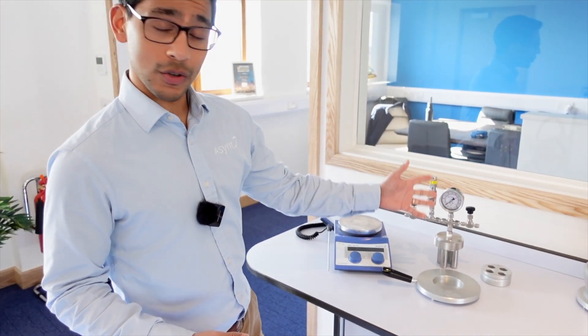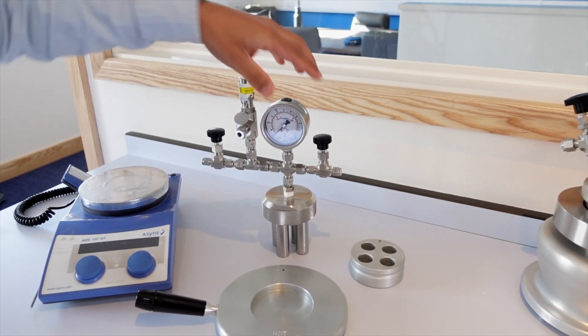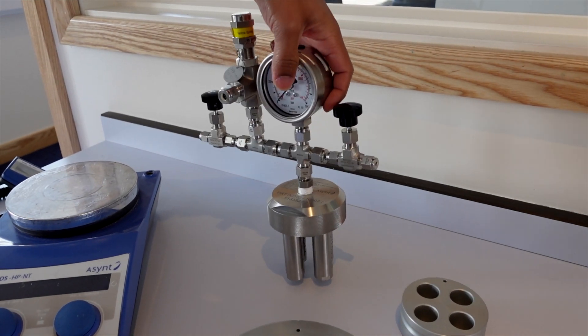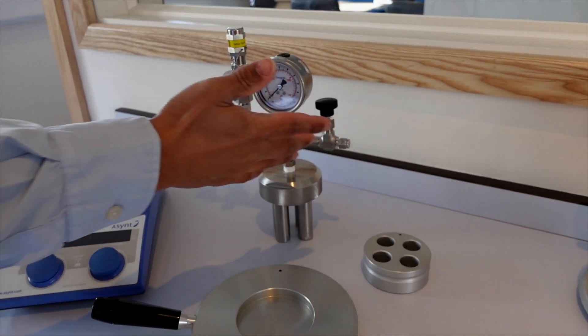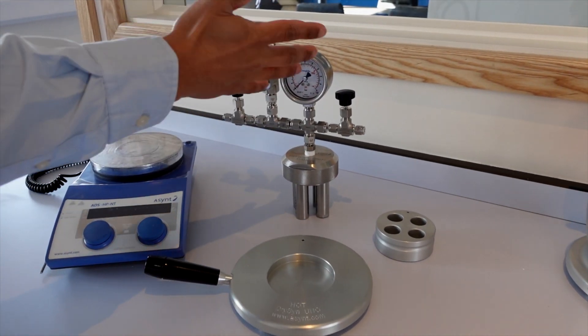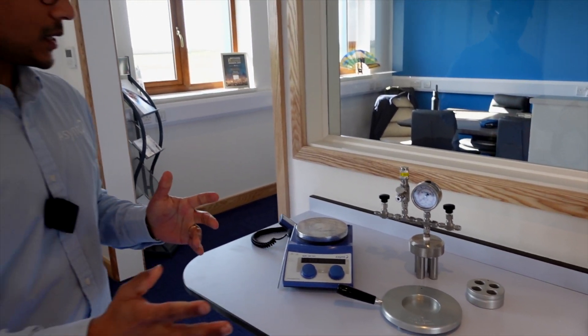So this is our QuadraCell high-pressure reactor. You get four cells, individual, in one reactor, each at 10 ml capacity. It comes with a common gas inlet, outlet, gauge, and a relief valve. So ultra-safe and can run a variety of different conditions and materials.